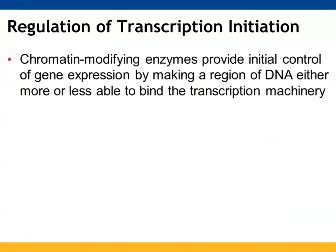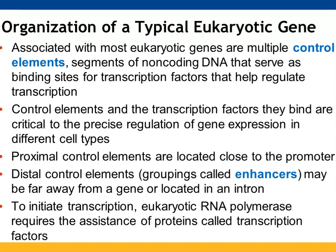Transcription initiation can be regulated by making DNA regions more or less available to transcription. We also have control elements — non-coding sequences of DNA located upstream of the transcription start point — that provide places for transcription factors to bind. Those transcription factors play a key role in determining what genes get expressed in which types of cells. You can have proximal control elements located close to the promoter, and distal control elements located further away — which might even be found in introns. These transcription factors need to be in place for RNA polymerase to start transcription.